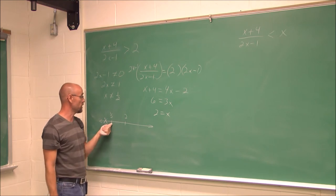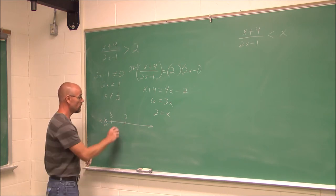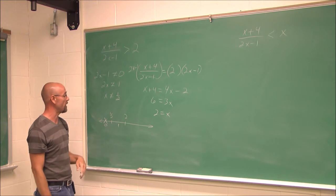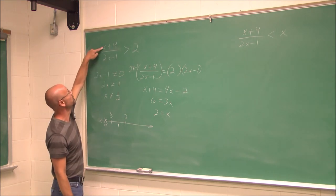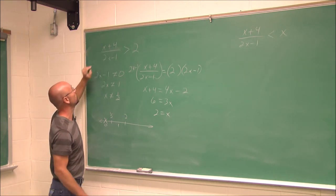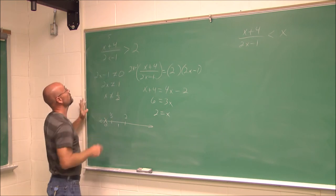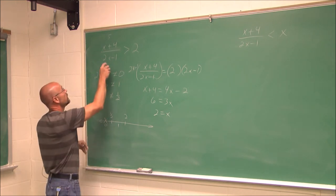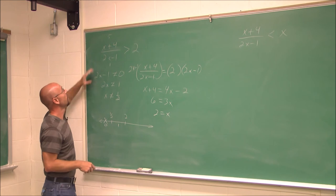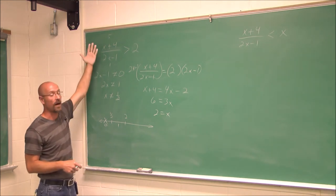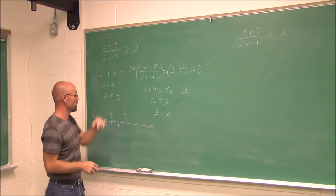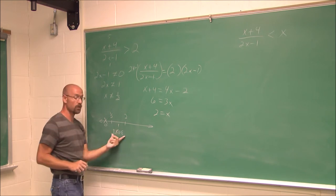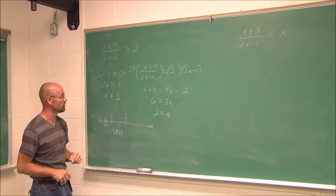If I choose a value between 1/2 and 2 — let's choose 1. If I put 1 in here, I get 1 plus 4, which is 5. If I put 1 in the denominator: 2 minus 1 is 1. I get 5 divided by 1, which is 5. 5 is greater than 2, so this interval is true — this is one of my solution intervals.